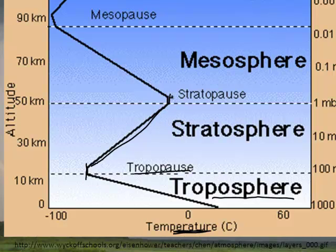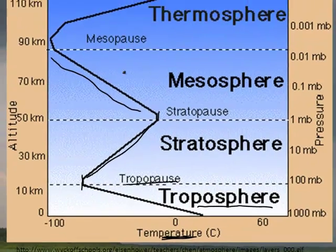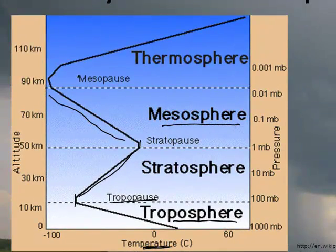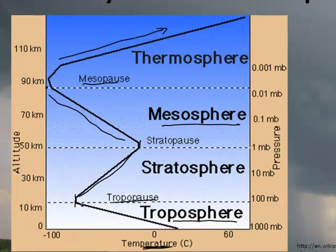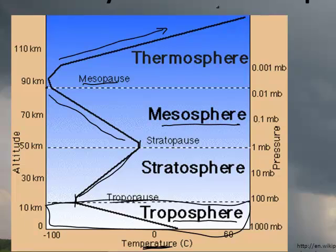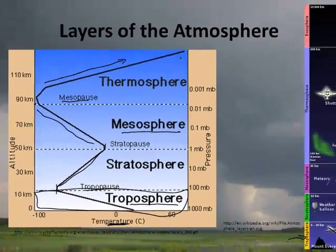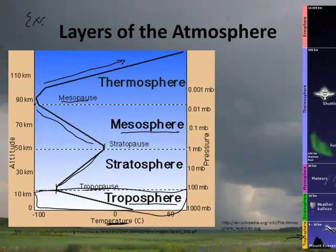Above the tropopause, as you go higher, the temperature actually begins to rise — that's the stratosphere. Then it flattens out again at the stratopause. Higher yet, the temperature drops to a very cold level in the mesosphere, then rises again at the mesopause and into the thermosphere. All of our weather happens in the troposphere. The thermosphere is approaching space, and above that is the exosphere.